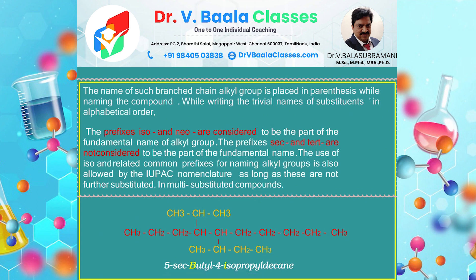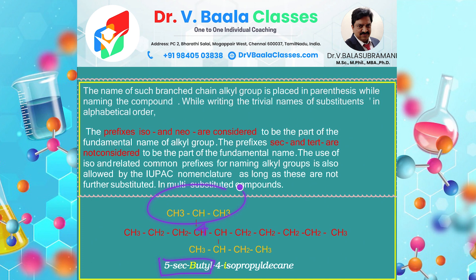According to IUPAC nomenclature, we use alphabetic order. For isopropyl and secondary butyl, we are not taking I and S but according to this rule we take I and B. The 5th carbon atom has secondary butyl present — that is 5-sec-butyl. At the 4th carbon atom, isopropyl is present — that is 4-isopropyl decane. This is the correct name for this structure.